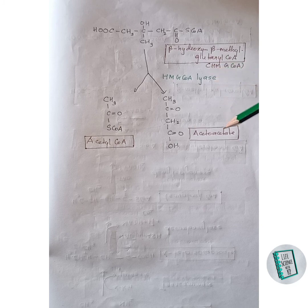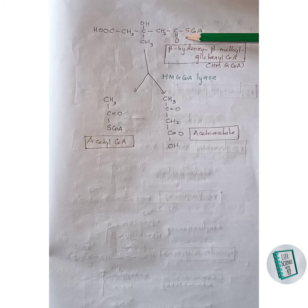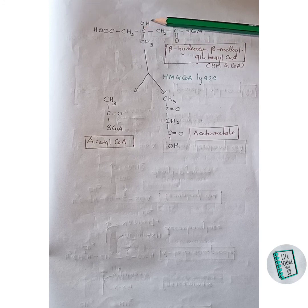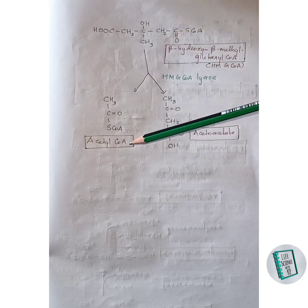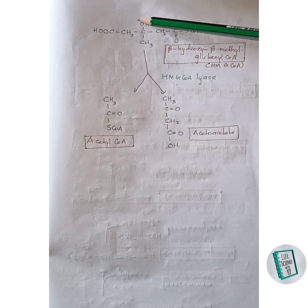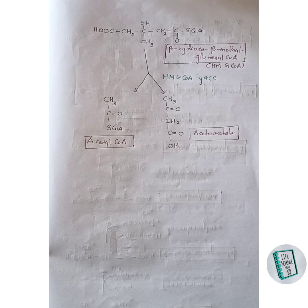HMG-CoA undergoes cleavage in the presence of HMG-CoA lyase: one fragment leaves as acetyl-CoA, the CH2 group accepts a hydrogen forming a double bond, and the remaining portion is acetoacetate. This completes the synthesis and degradation of leucine.